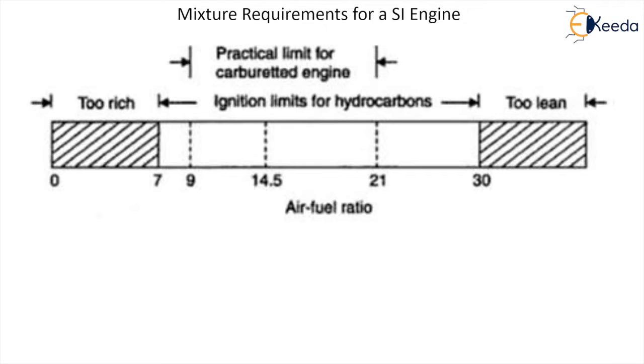Then the question arises: what can you supply and how can you supply it? This is the mixture — the limits under which you can mix fuel in air. In this diagram, you can see certain numbers written: 0, 7, 9, 14.5, 21, and 30.